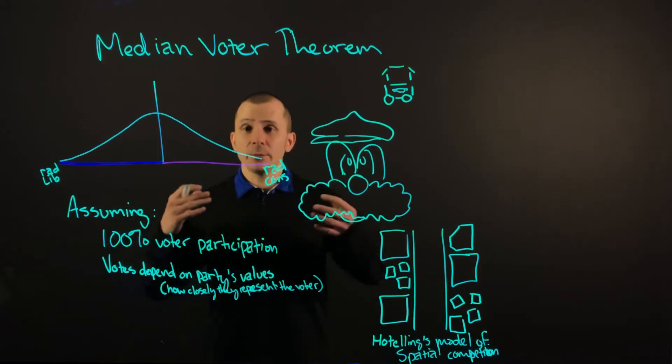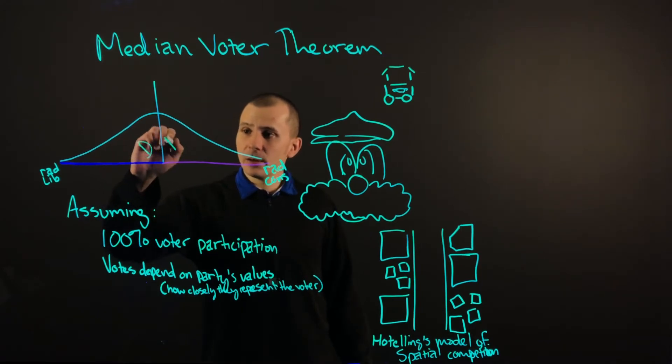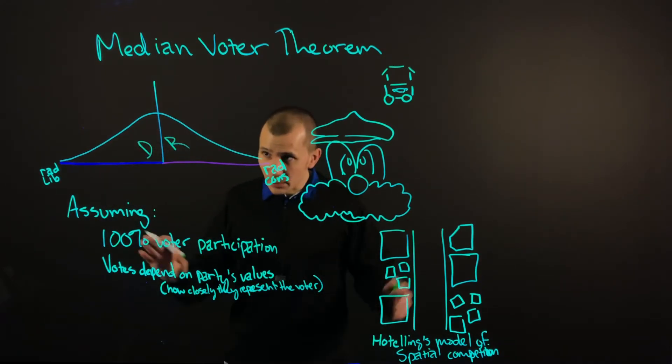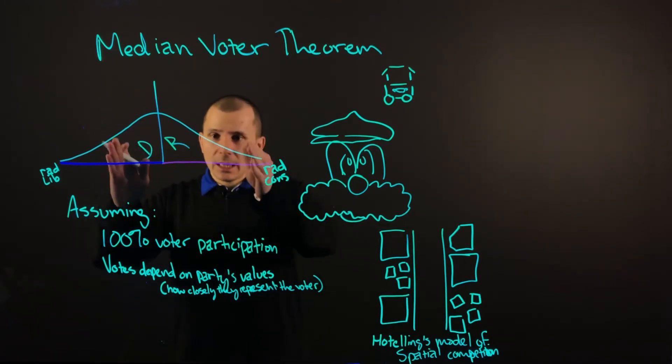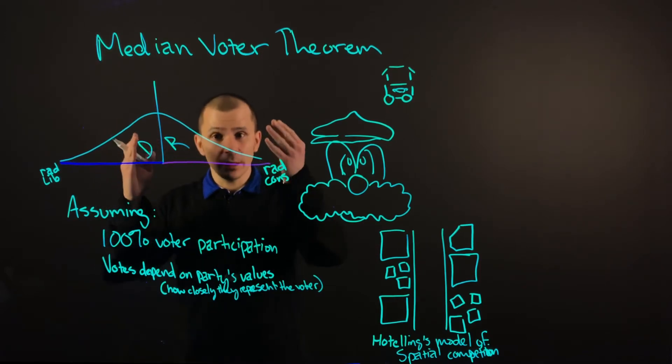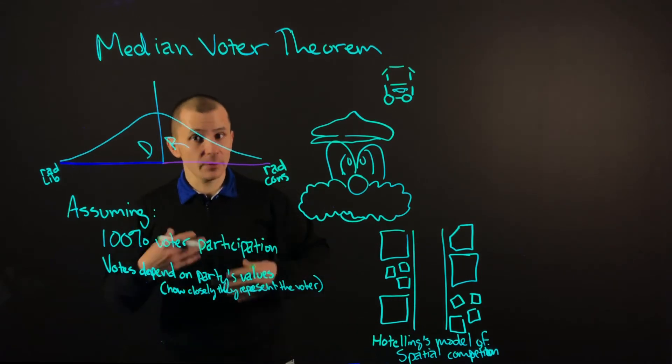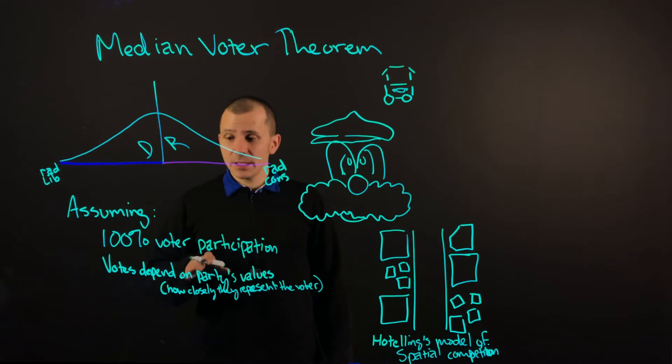So we will just put the D here and the R here. If they were to distribute themselves a little bit further and represent fewer groups of individuals, or go too far in one direction, the voters are going to sway in another. Now this can work in economics in a very similar way.